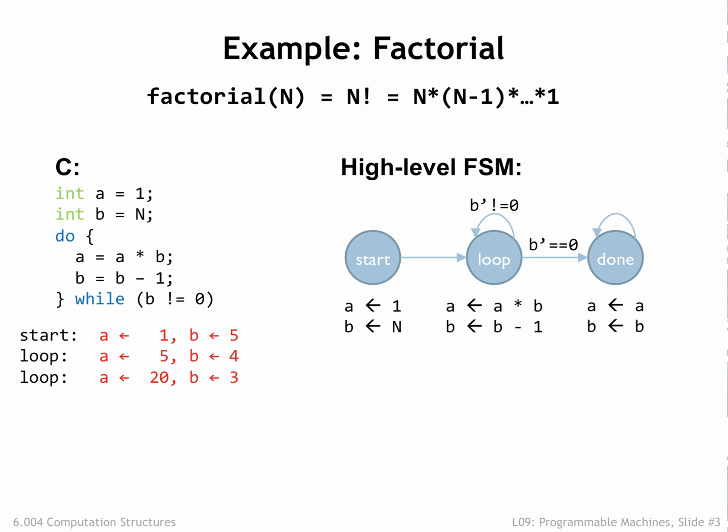The FSM repeats the loop state until the new value to be stored in b is equal to 0, at which point the FSM transitions into the final done state. The high-level FSM is useful when designing the circuitry necessary to implement the desired computation using our digital logic building blocks.